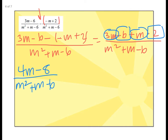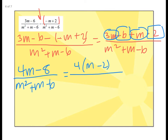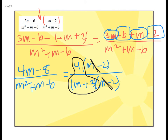We've taken care of the adding and subtracting and combined like terms. Now our job is to simplify. Factor the top — it's two terms, so look for a GCF: taking out 4 gives 4 times the quantity m minus 2. Factor the bottom trinomial using diamond and box: that gives m plus 3 and m minus 2. The m minus 2 cancels, leaving 4 over m plus 3 as the final answer.